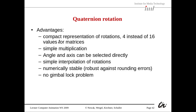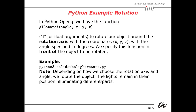The advantages of quaternions are: compact representation — 4 values instead of 16 for matrices; simple multiplication; angle and axis can be selected directly; simple interpolation of rotations; numerical stability against rounding errors; and no gimbal lock problem. In Python we use the glRotatef function for rotation — 'f' is for float arguments. The first argument is the angle in degrees, then x, y, z for the rotation axis. We specify this function before the object to be rotated.